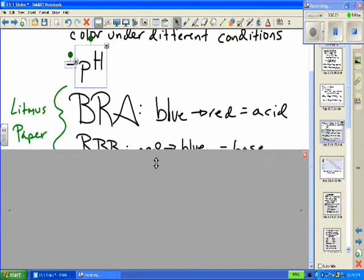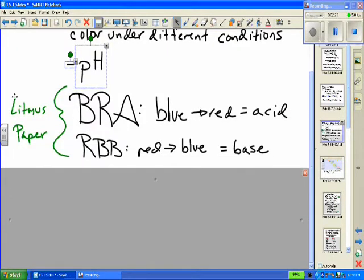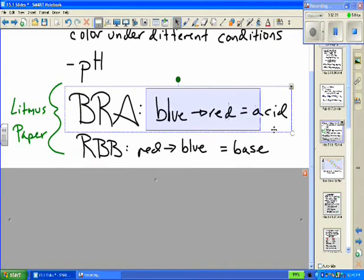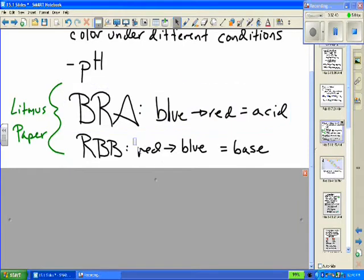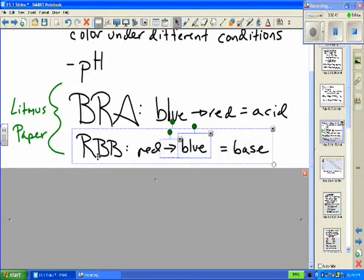Some indicators you might be familiar with is litmus paper, you probably used in lower school. And a way to remember litmus paper reaction is to remember the word bra. If you remember bras, you can think of blue to red as an acid. So blue litmus paper turns red in an acid, and red litmus paper turns blue in a base, RBB.